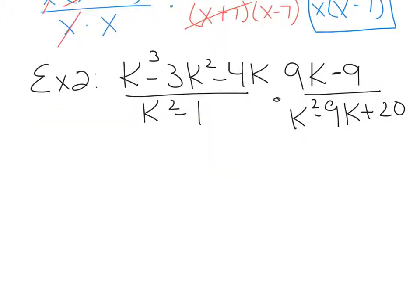Example 2, still on page 145: k cubed minus 3k squared minus 4k over k squared minus 1, times 9k minus 9 over k squared minus 9k plus 20. You cannot cancel before you factor. I know you'd like to cancel the k squareds — you can't do that. You can't cancel this 9 either. You can't cancel terms. Factor, factor, factor, factor, and then we will cancel with factors.